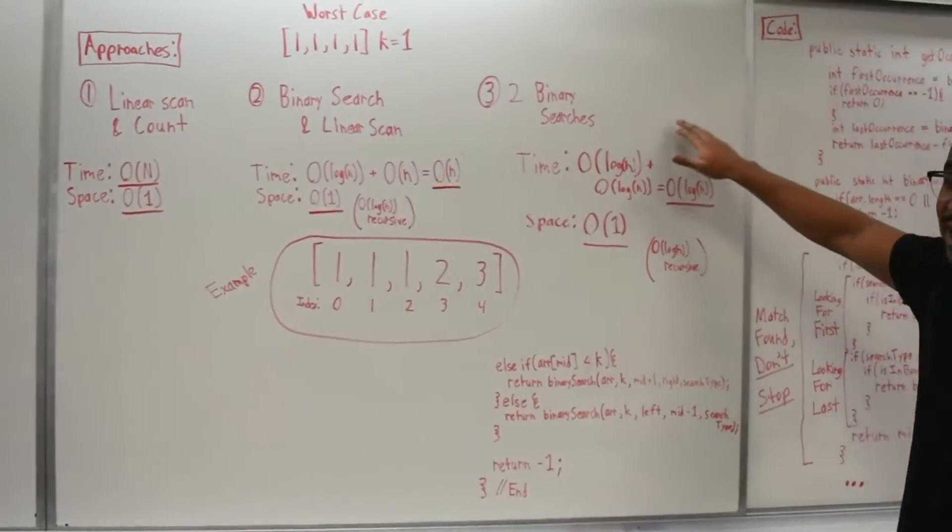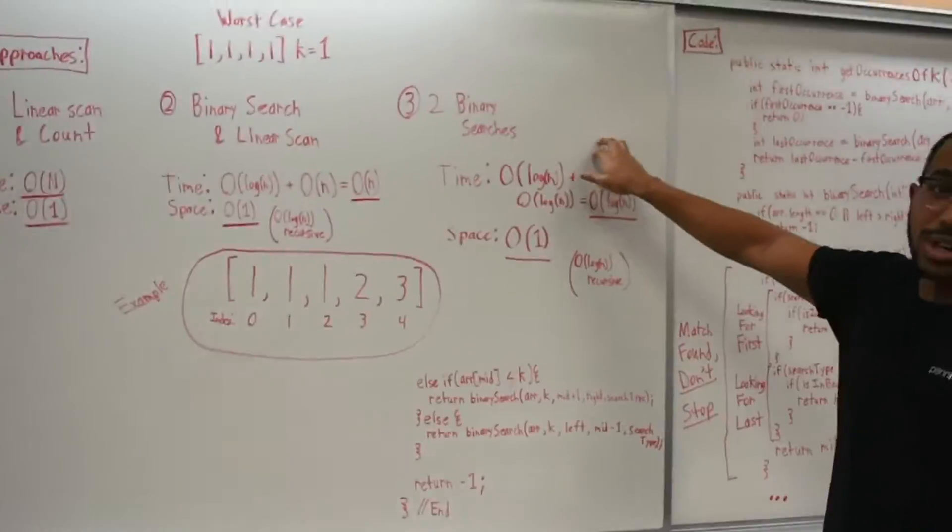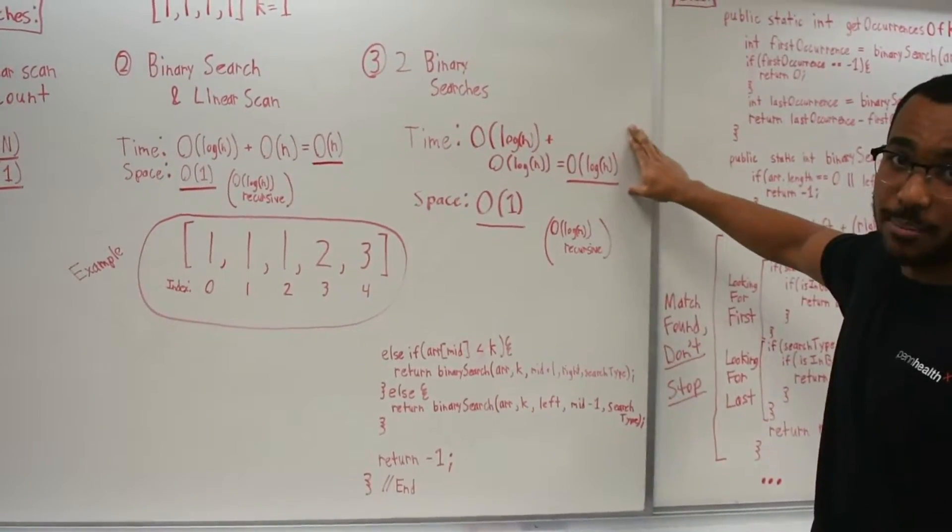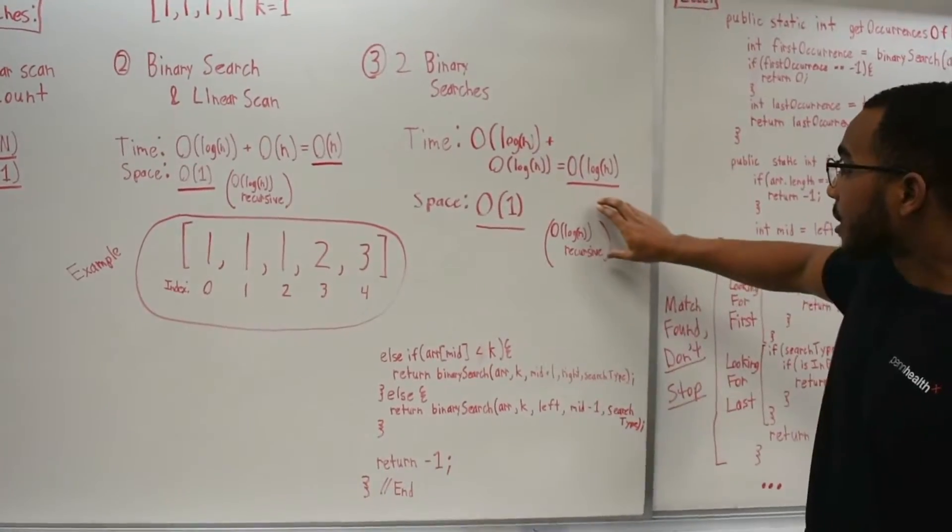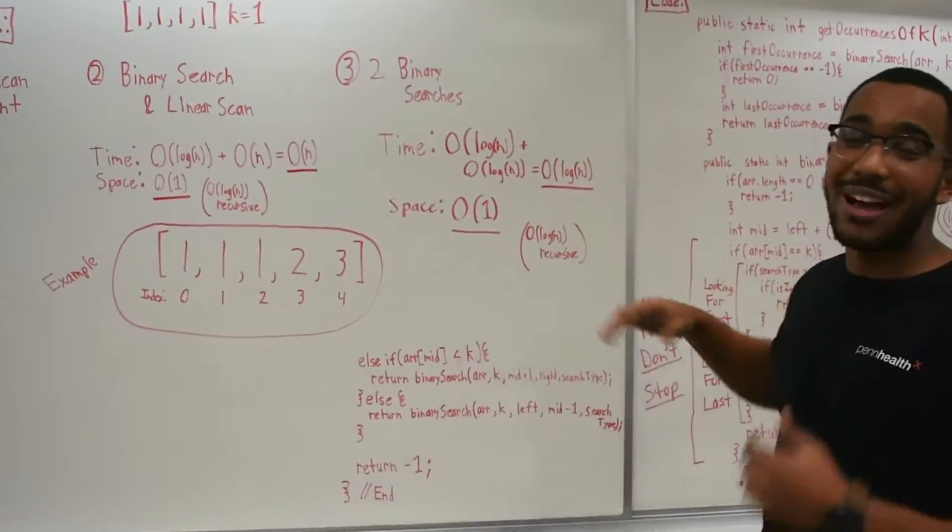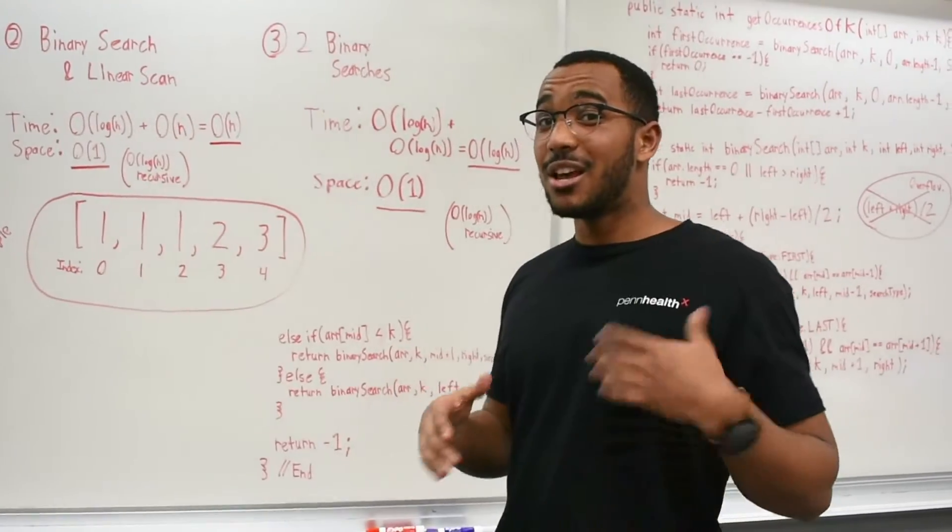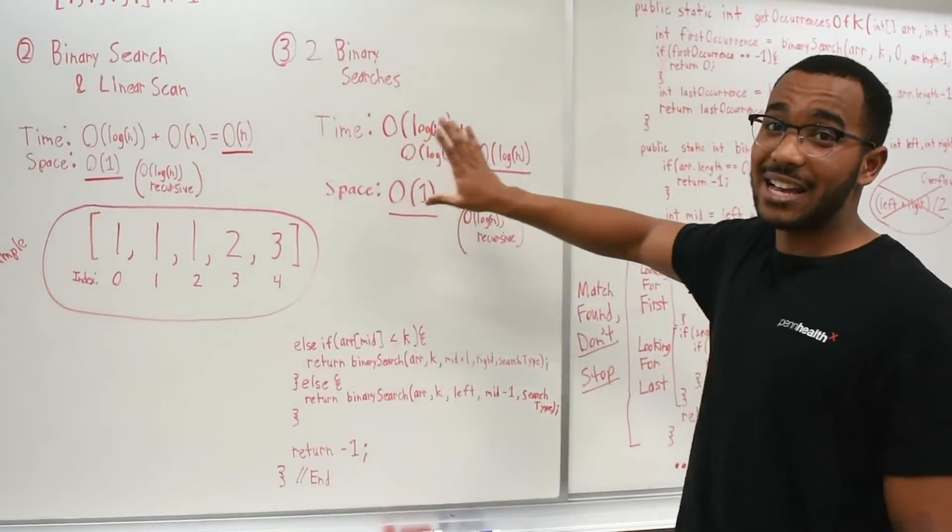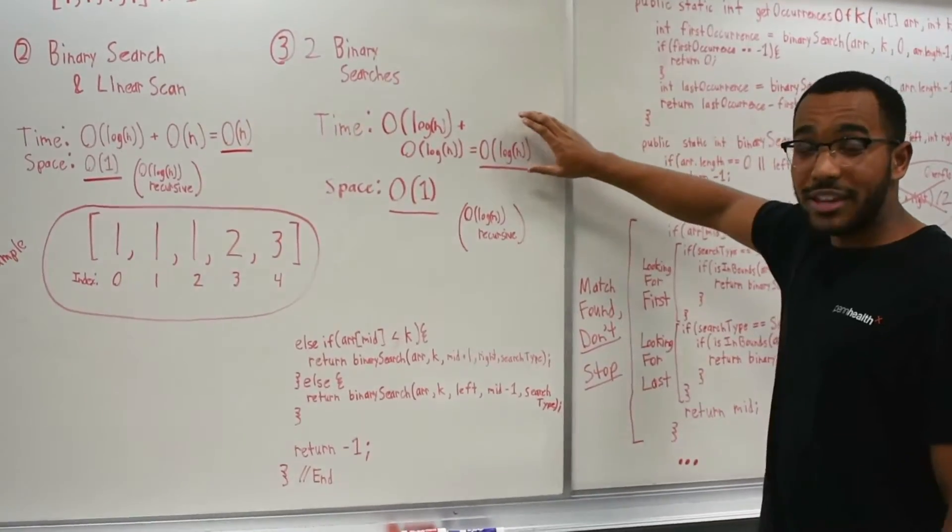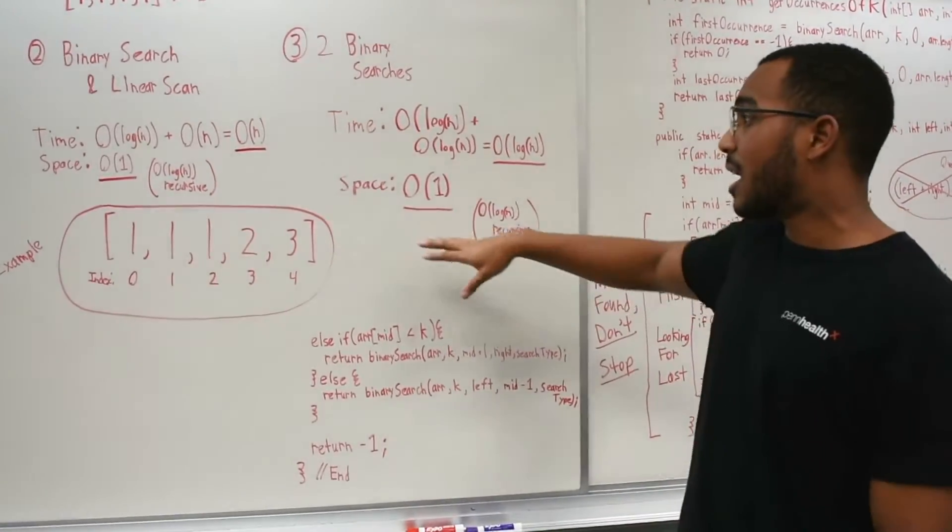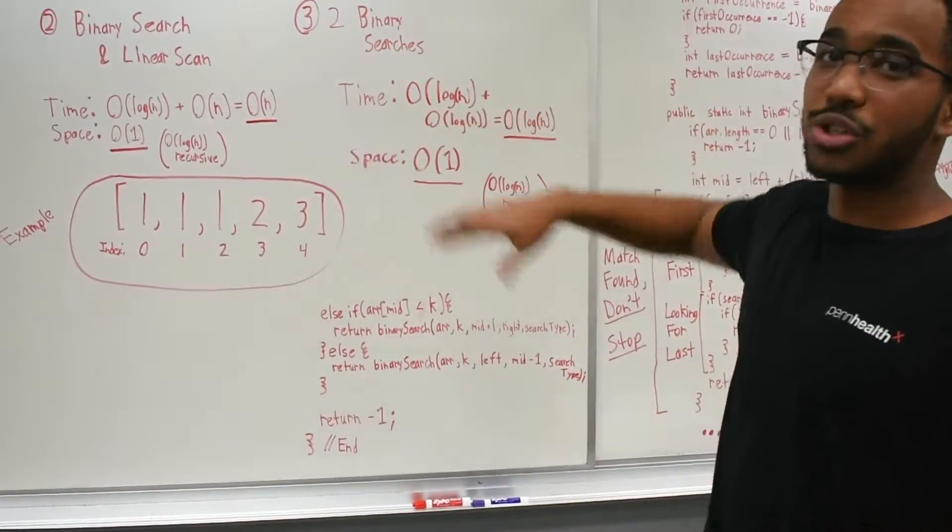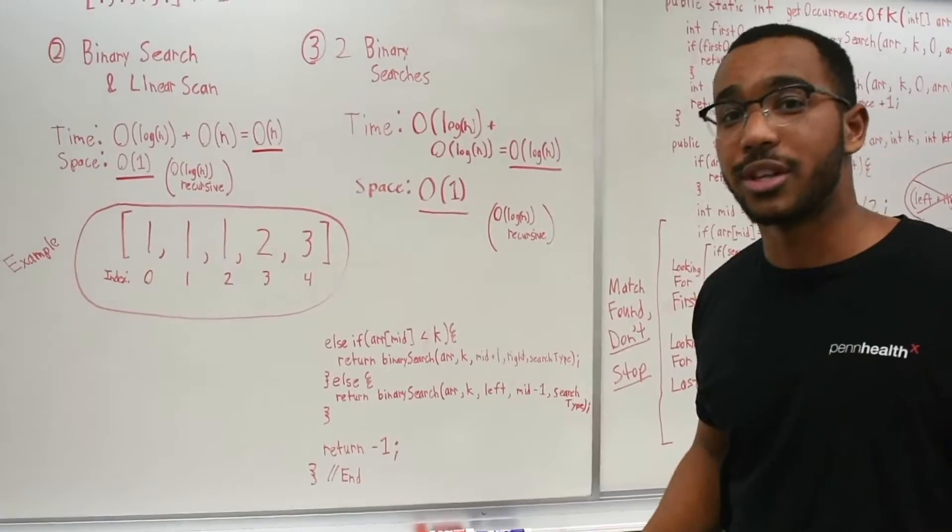So just to nail down the time complexities, this is going to do two binary searches. So it's going to be log N plus log N, which is just going to stay log N, big O of log N. And then recursively, if we do it recursively, we'll have log N because of stack space. But if you do it iteratively, you're going to have constant space. So this is a very fast algorithm. It's going to run in log N having our search space, and it's going to have constant space if we do it non-recursively.